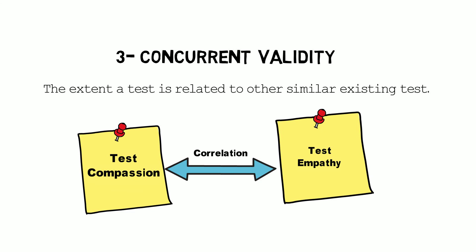If you develop a test and want to measure its concurrent validity, you look for other tests that are similar in the way they are defined and try to establish a correlation between them. The higher the correlation between those tests, the better the concurrent validity.